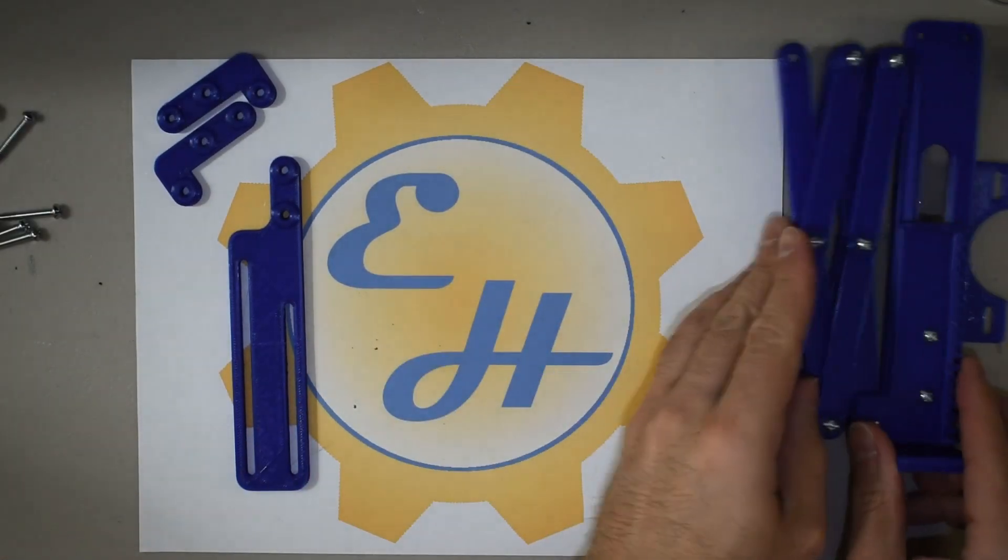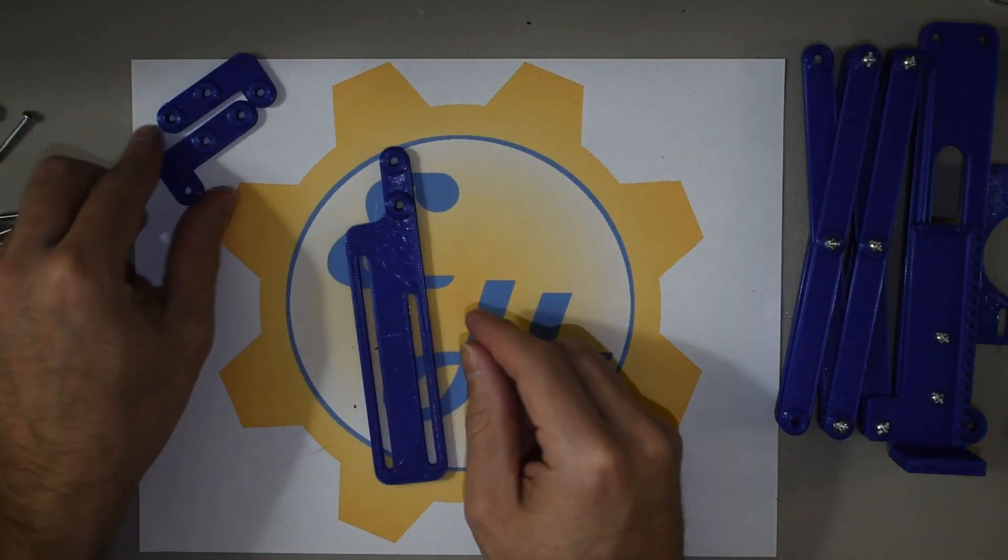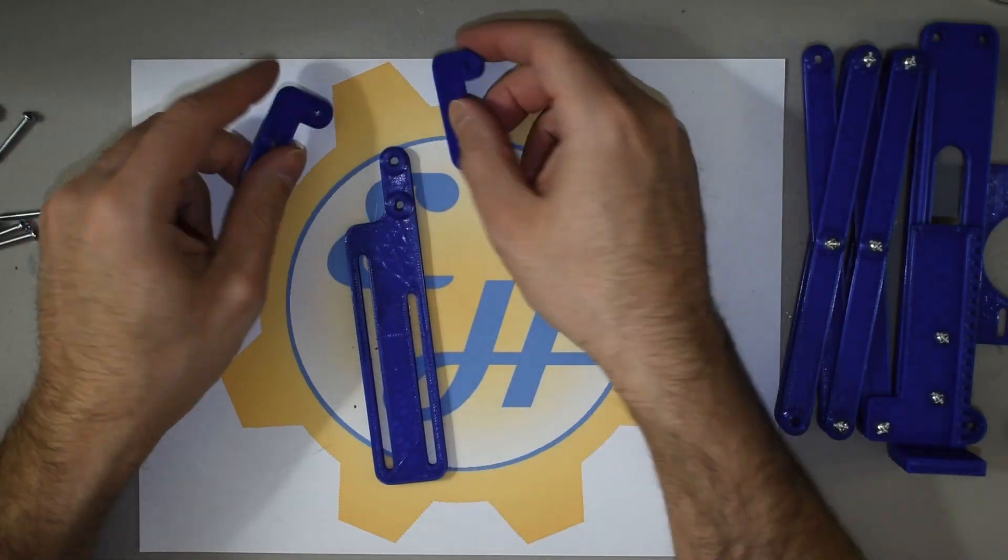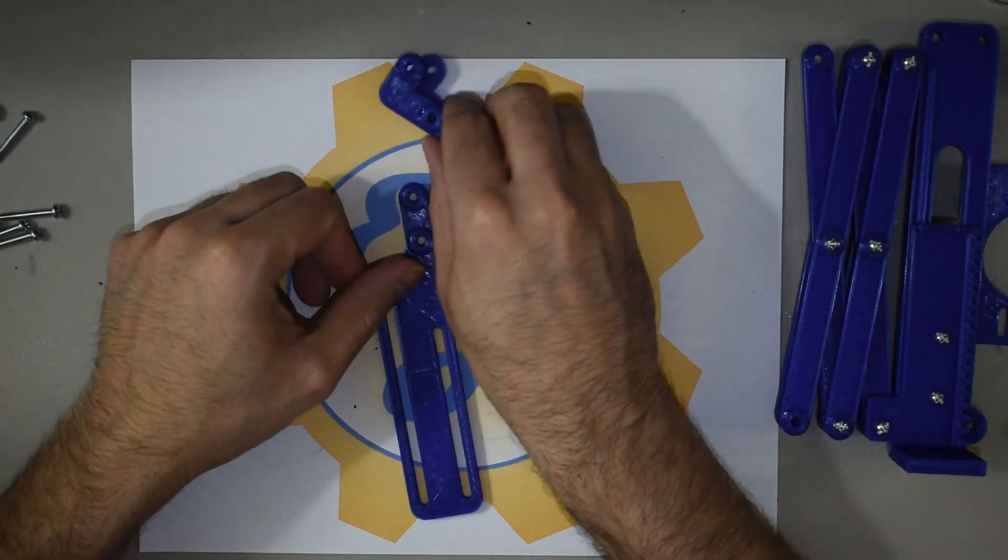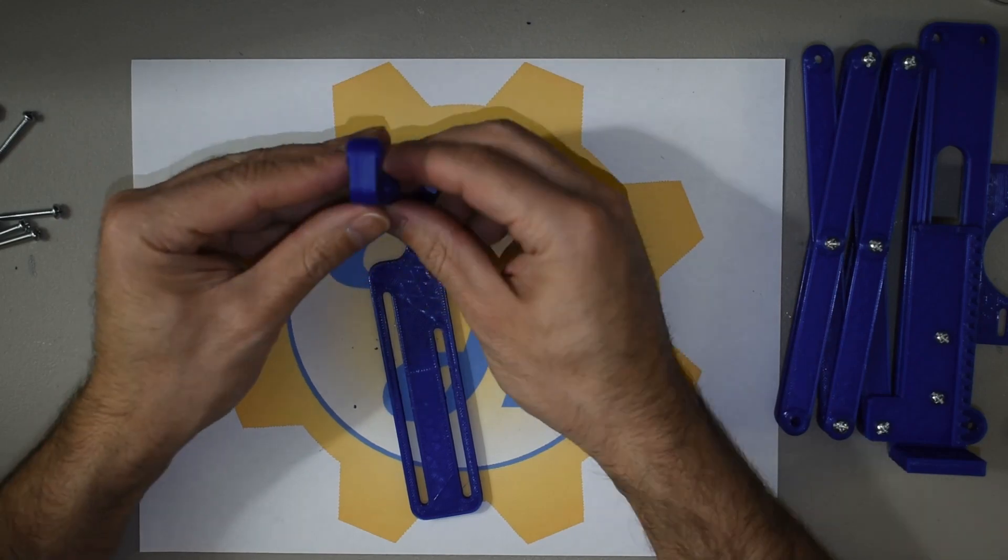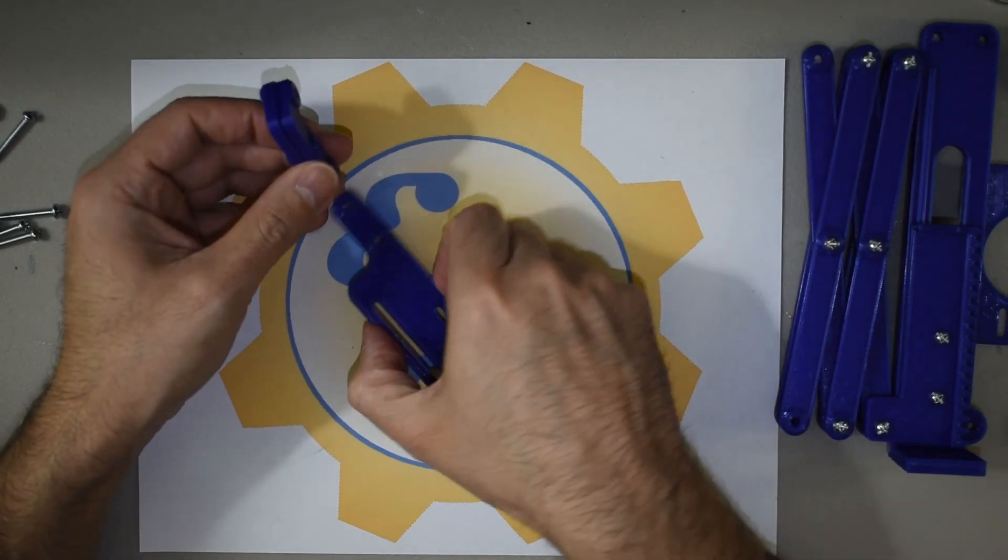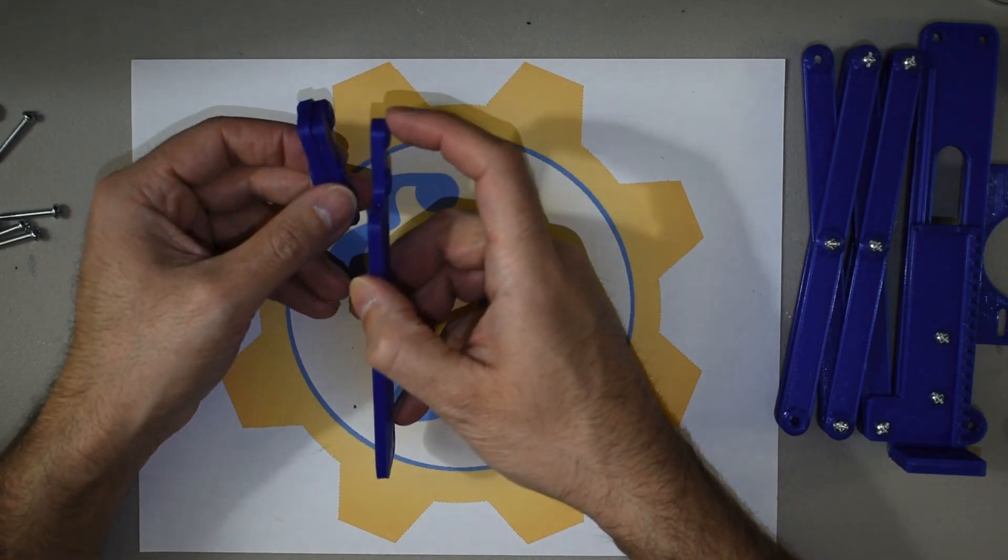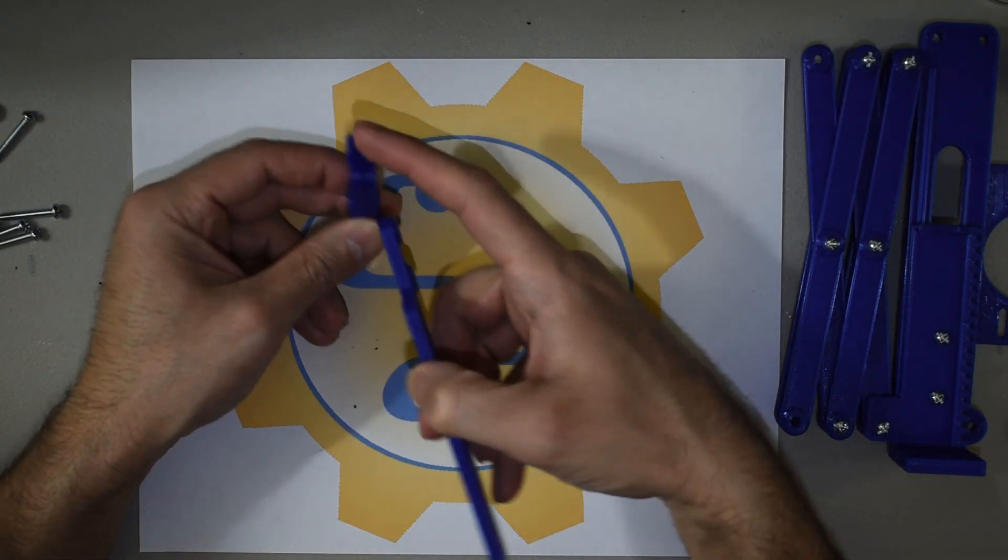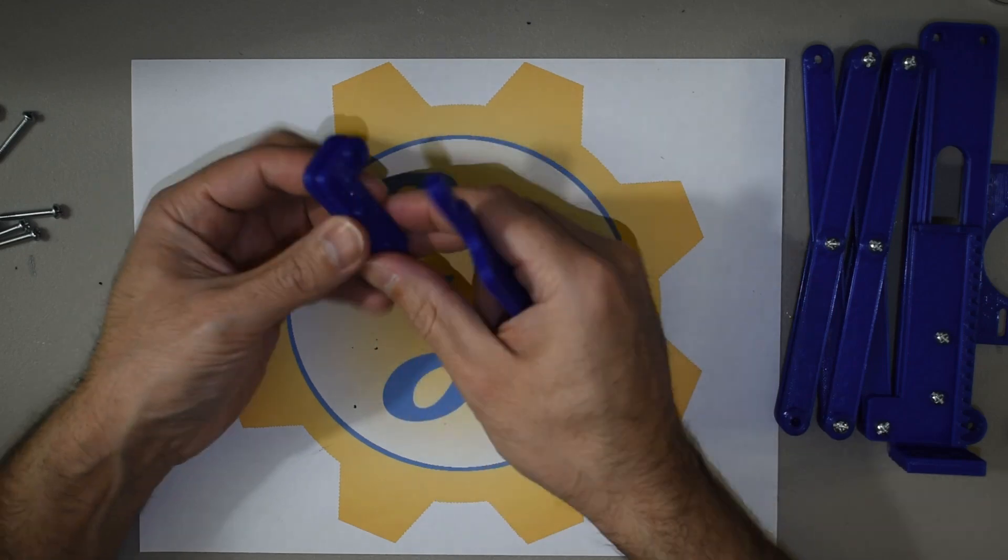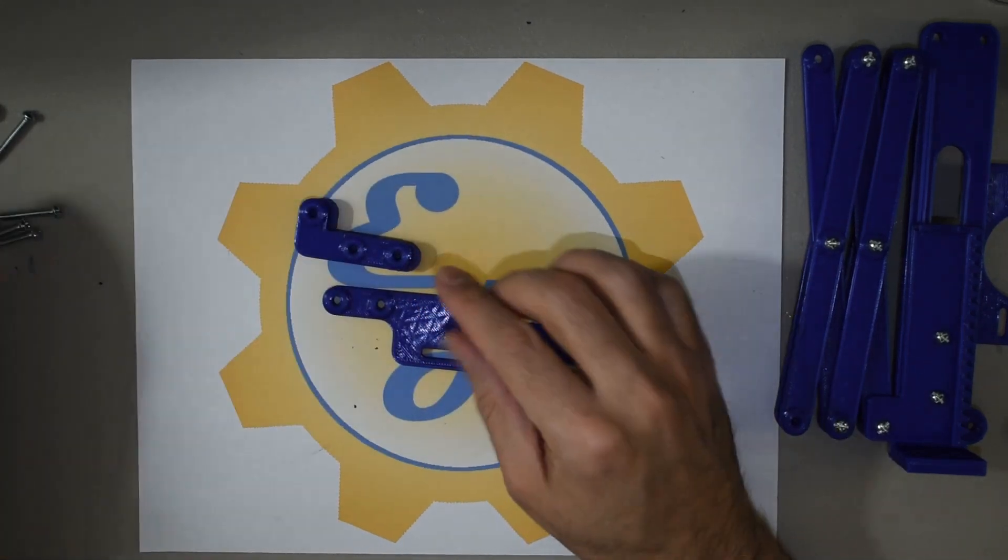So to assemble this guy, you're going to use these two L prints. Now these actually, the bumps go away from each other. So this one's going to go to the right. This one's going to go to the right and this one will go to the left. So basically it's going to look like this.